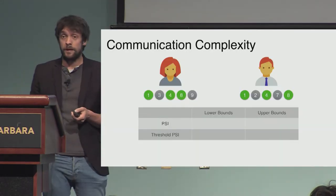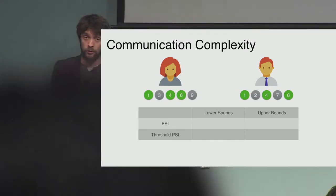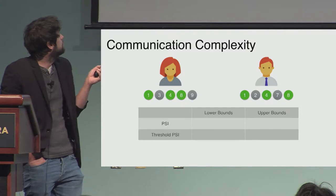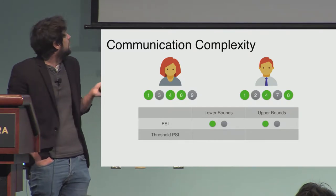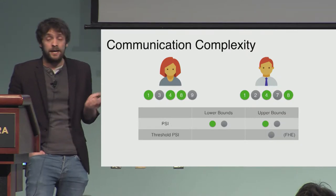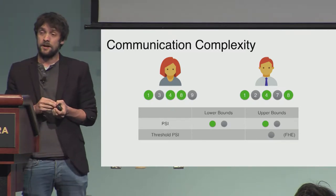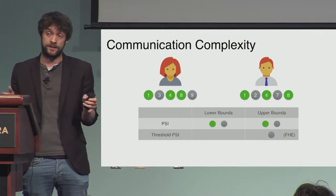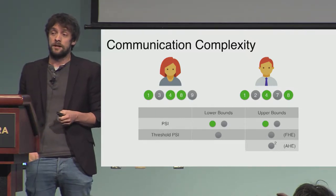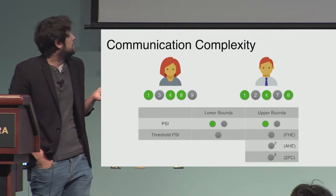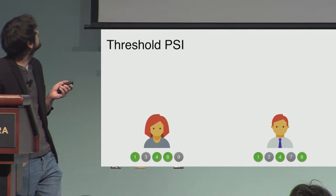What we show in this paper is that this is basically not true for the threshold case — we can design threshold PSI protocols with communication complexity potentially smaller than the set size itself. For PSI, communication must be linear in total set sizes. For threshold PSI, if we have an upper bound on how different the sets can be, using FHE we can achieve communication linear in the upper bound on the symmetric set difference, using additively homomorphic encryption it is squared in that bound, and using generic 2PC it is cubed.